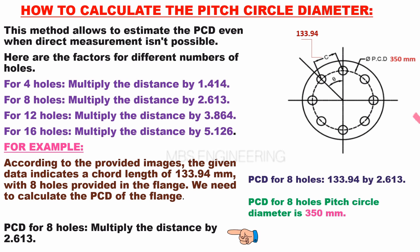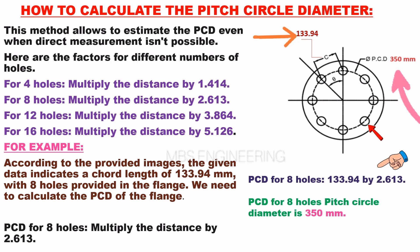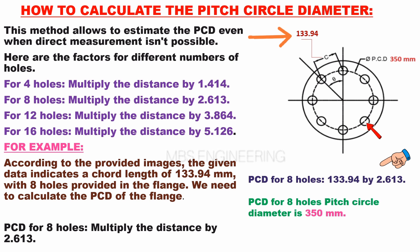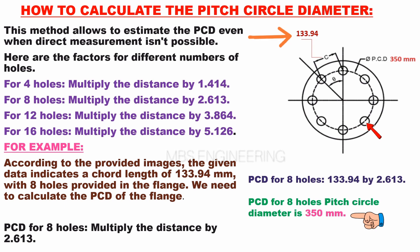PCD for eight holes: multiply the distance by 2.613. PCD for eight holes: 133.94 multiplied by 2.613. The pitch circle diameter for eight holes is 350 mm.